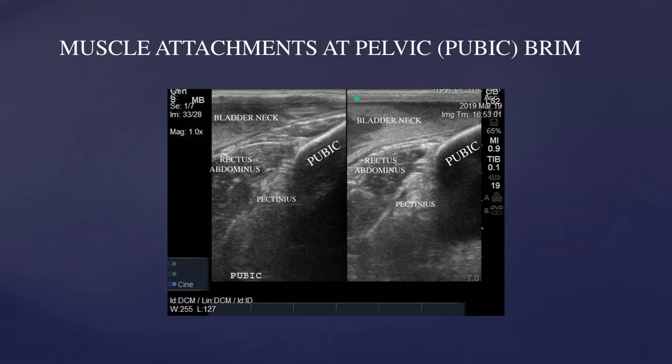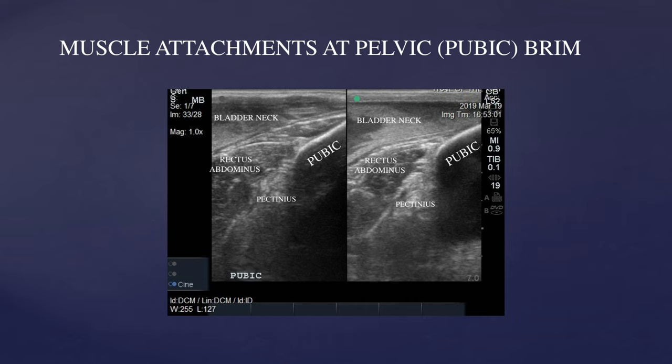Slide seven shows a normal ultrasound appearance of the muscle attachments at the pubic or pelvic brim. You can see the rectus abdominis as it arches off the cranial aspect of the pubis, and the entheses of the pectineus muscle as well. The bladder neck is visible at the very top portion of each of these images, but this is a good normal reference image for these muscle attachments at the pubic brim.